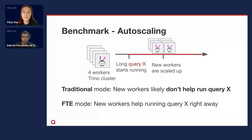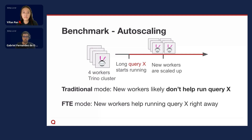If you're using the traditional mode for Trino, it's likely that the new workers that were scaled up won't help running query X. That's because the traditional mode divides the query workload for the number of workers that were available when the query started, and it's not flexible enough to recreate the plan to allow new workers to join. We can have that flexibility with fault tolerance mode. If a query is waiting for more resources to run more tasks in fault tolerance mode, as soon as you bring up new workers, those tasks can be scheduled on them and query X will get a boost on its execution.